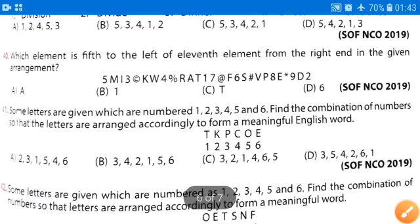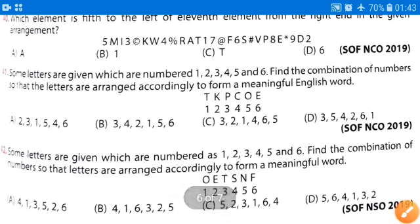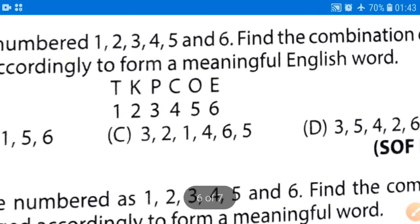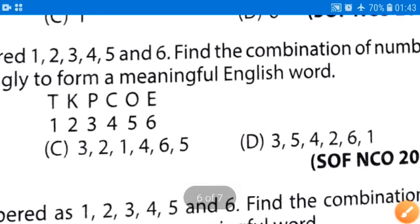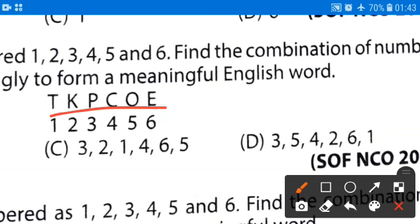Moving further to question number 41. It is given that some letters are given, which are numbered 1, 2, 3, 4, 5, and 6. Find the combination of numbers so that letters are arranged accordingly to form a meaningful English word. Same question which we have done earlier. We have to arrange this letters into a meaningful word. We have T-K-P-C-O-E.